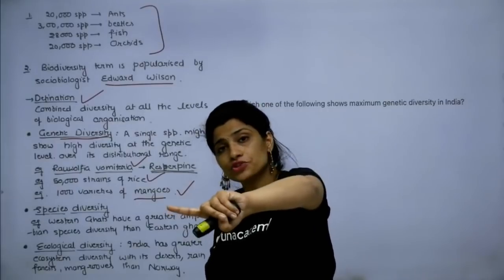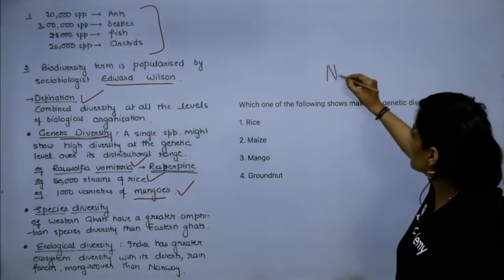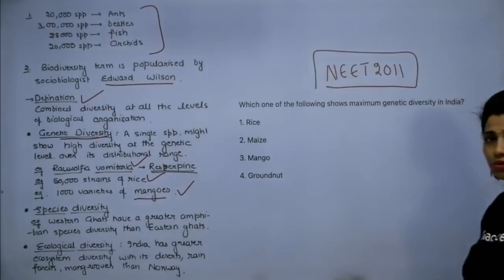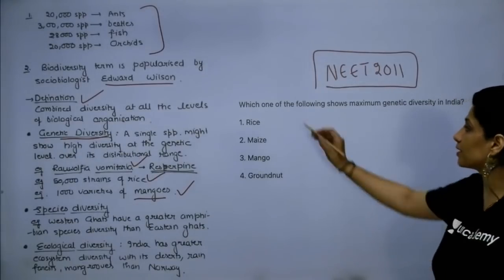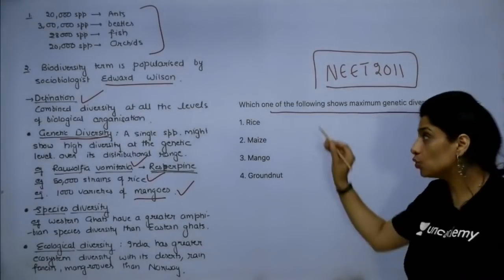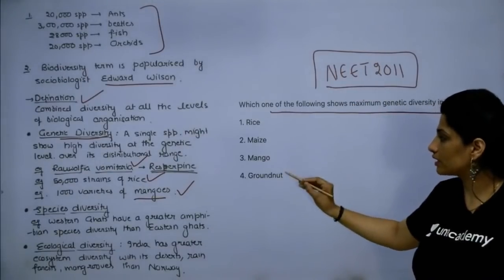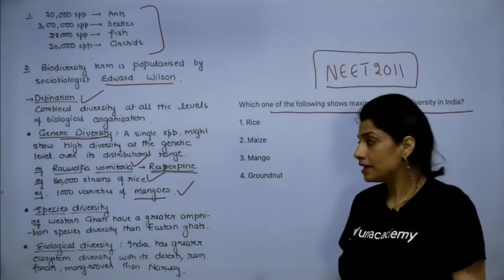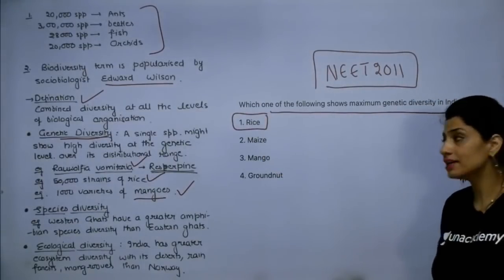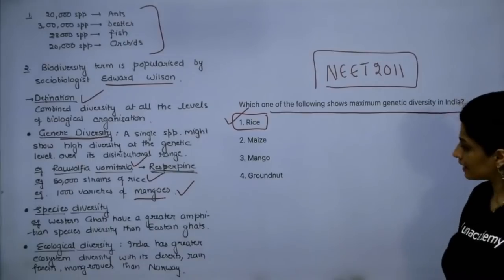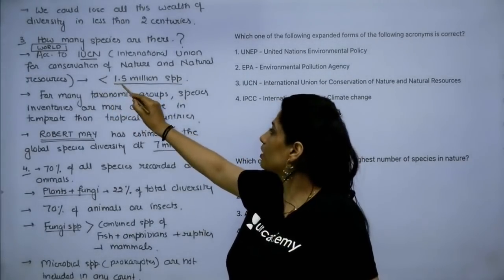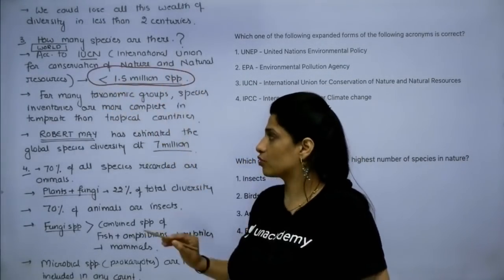In the detailed notes, add past year questions for each particular topic — what has come in NEET in the past 10 years. For example, NEET 2011 asked: which one of the following shows maximum genetic diversity in India? The options were maize, mango, groundnut. The answer is rice, which has 50,000 strains, while mango has only 1,000 varieties.